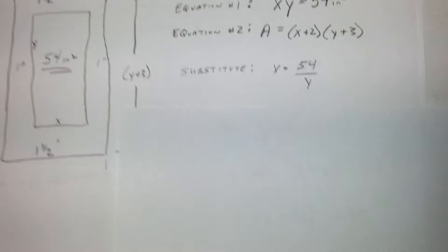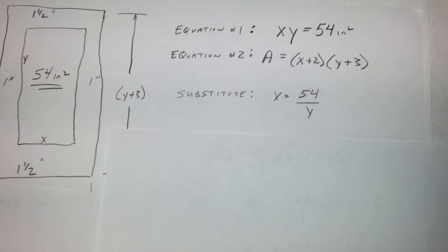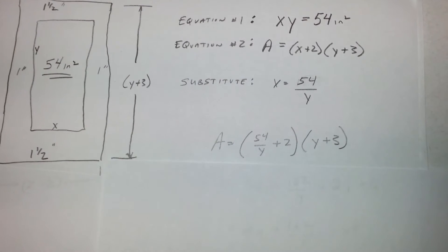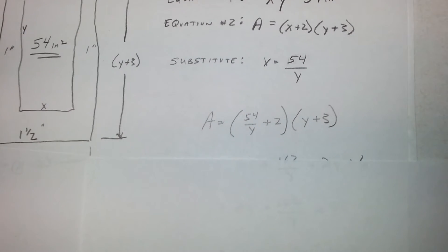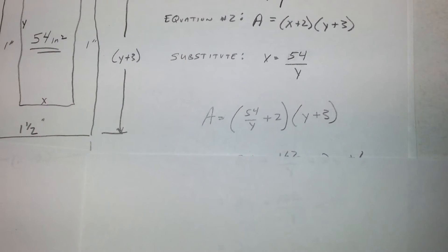We will start with the substitute. We will solve for x on the first one, so it will be 54 over y. And then we will plug that and substitute it into the area.